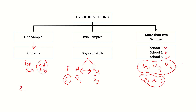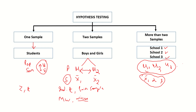For these types of tests, we have seen Z-test and T-test. For two-sample tests we can have an independent T-test, a paired sample T-test, and non-parametric alternatives such as the Mann-Whitney test and the Wilcoxon test.